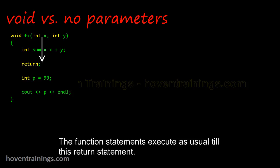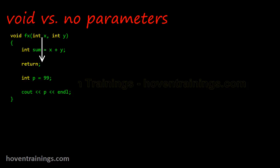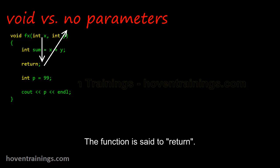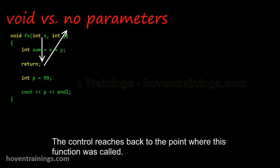The function statements execute as usual till this return statement. But as soon as this return statement is met, the execution halts. The function is said to return. The control reaches back to the point where this function was called.